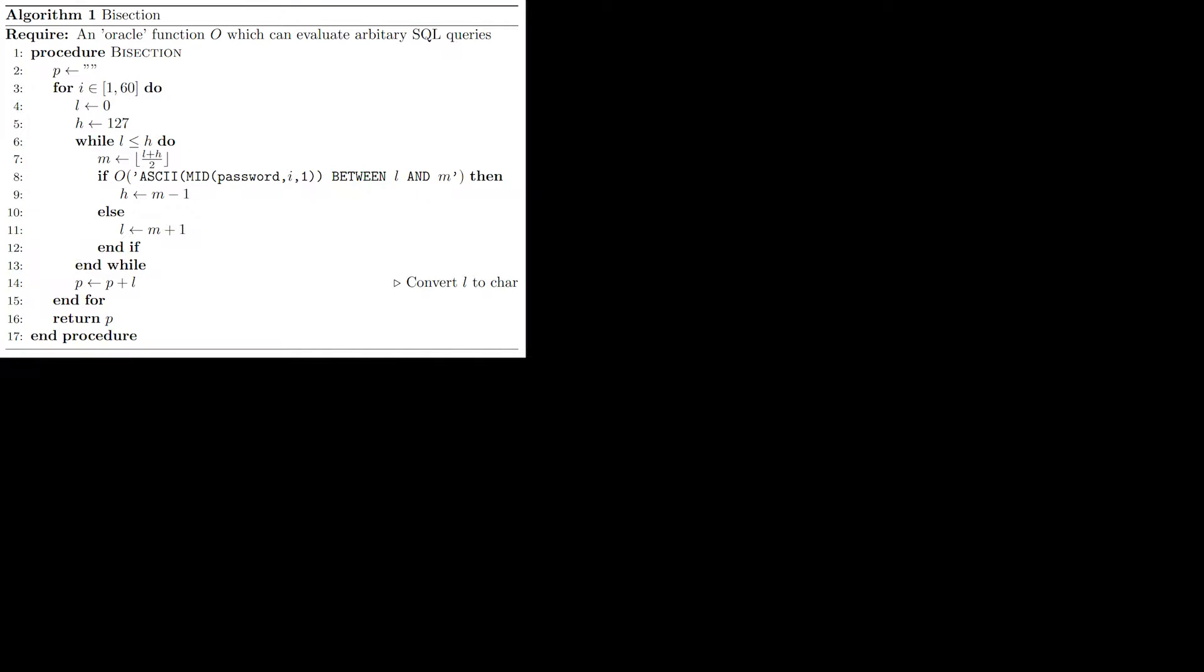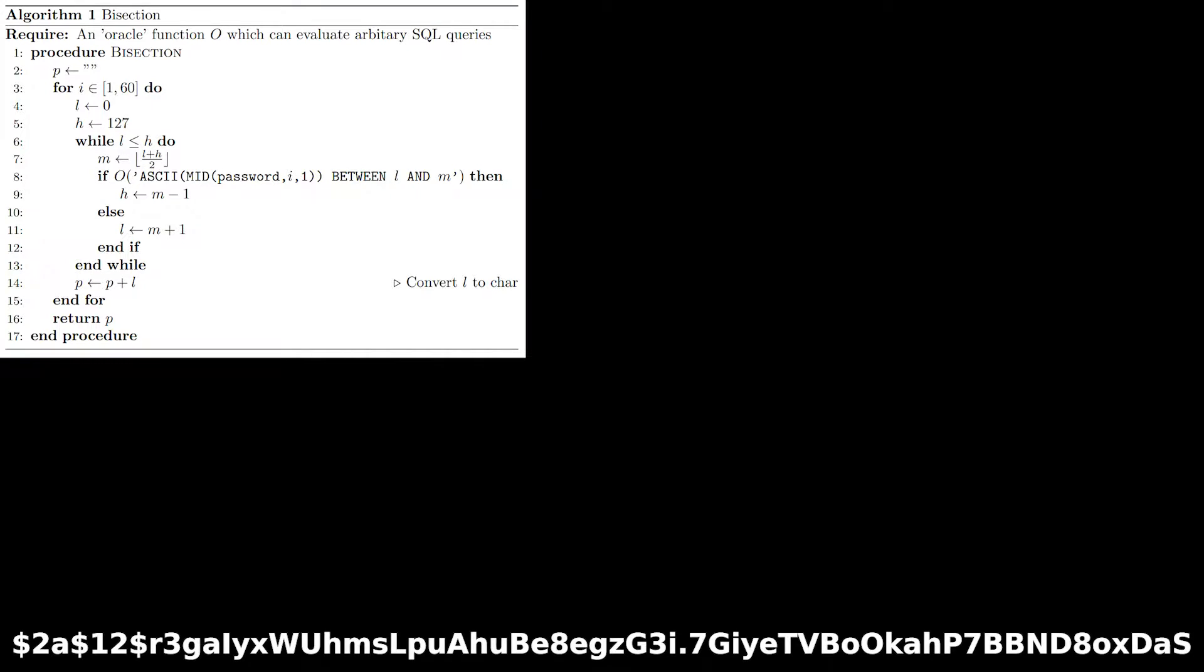Let's imagine we're trying to dump this password, which is 60 characters long. We assign an empty string to P and enter the first loop with I equals 1. ASCII characters have values from 0 to 127, so we define our search area with the lower bound L equals 0 and the upper bound H equals 127.